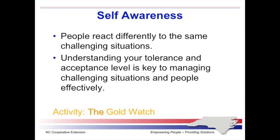Every family, organization, and or community has one — a challenging person. And if you can't identify them, it might be you. We all view the actions of others based on our own value system and life experiences. Each person tends to react differently when placed in the same situation. Understanding your tolerance and acceptance level is key to managing challenging situations and people effectively. To illustrate, take a look at the gold watch activity provided in the links below. Read through the story. Rank the characters from least objectionable to most objectionable and then consider how individuals in your community or your organization might rank these characters.